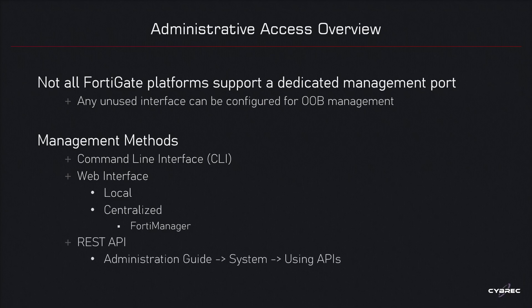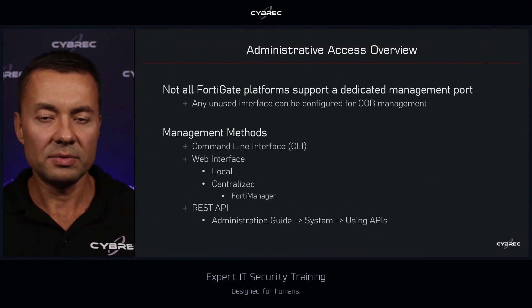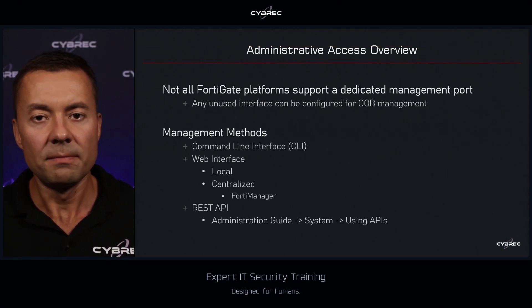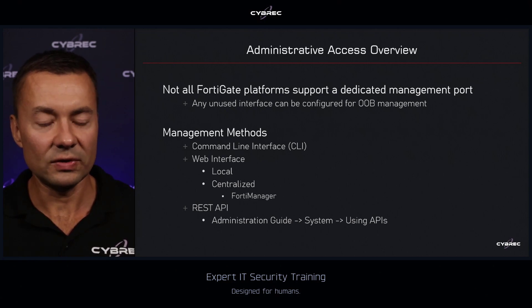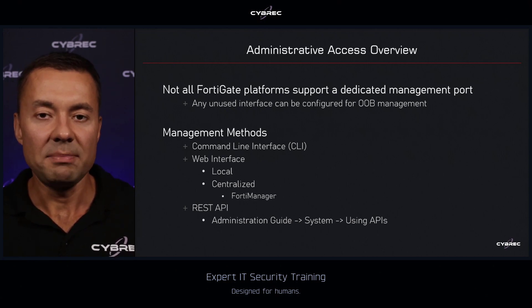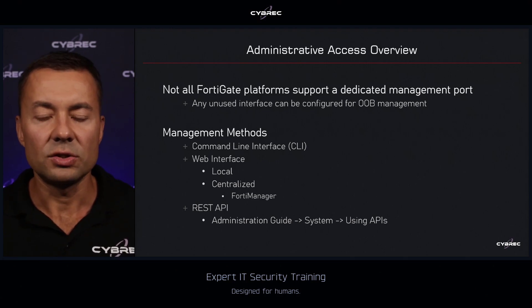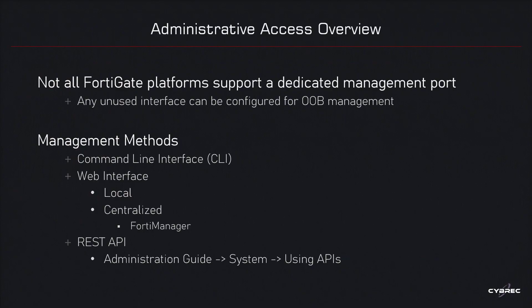The last option, commonly used by DevOps teams, programmers, or application scripts, is the REST API. The API is used for automated management and administration. FortiGate accepts REST API calls, allowing you to read or modify the configuration — basically performing regular CRUD operations.